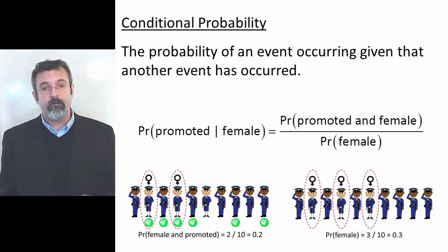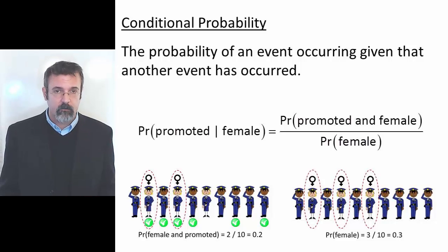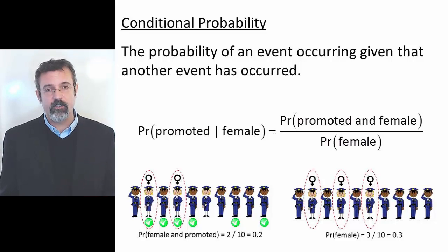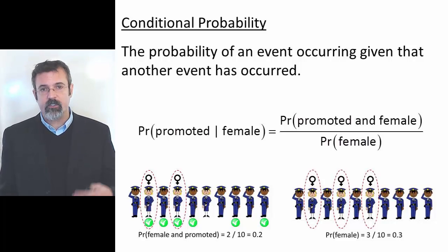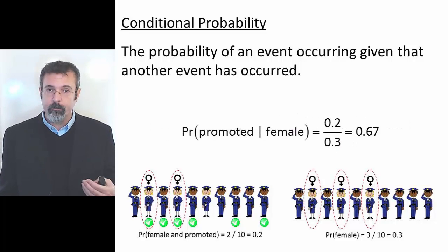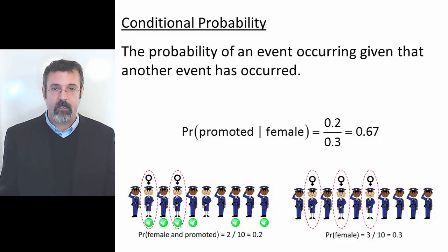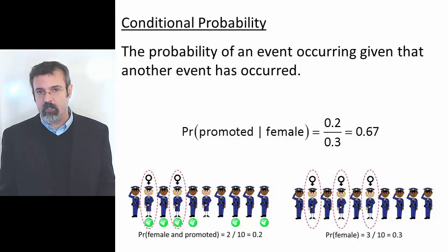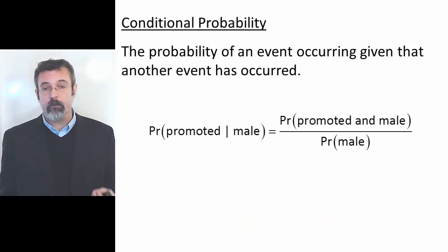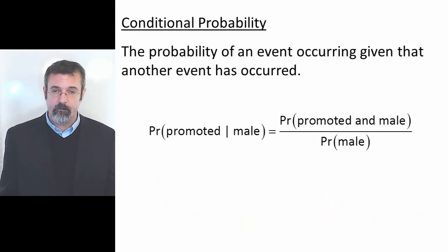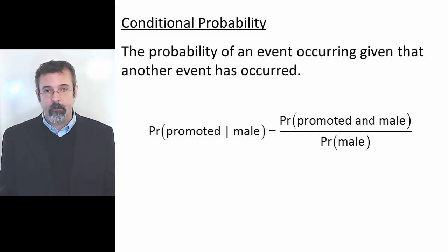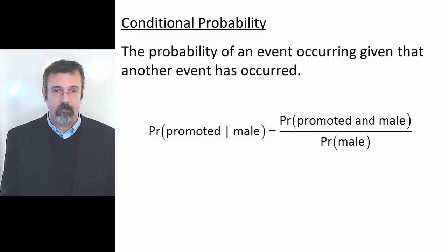Of the ten officers, three were female, so the probability of being female is 30%. Dividing one by the other gives us the probability of an officer being promoted given that the officer is female: 67%. Now we can perform the same calculation for the males. The probability of being promoted given that the officer is male is the probability of being promoted and male divided by the probability of being male.